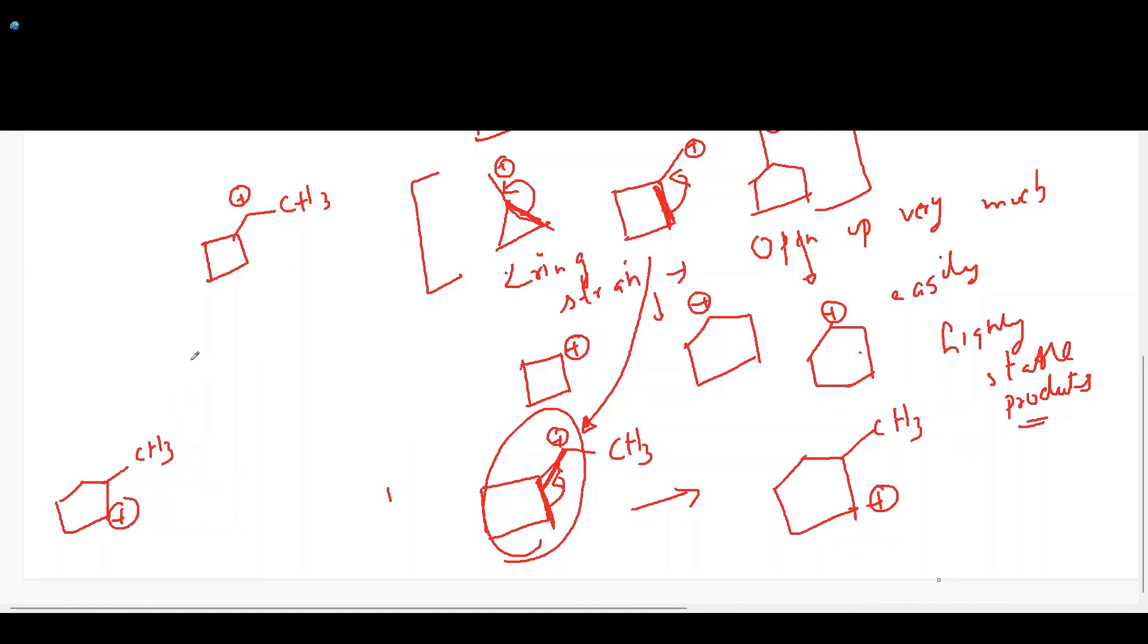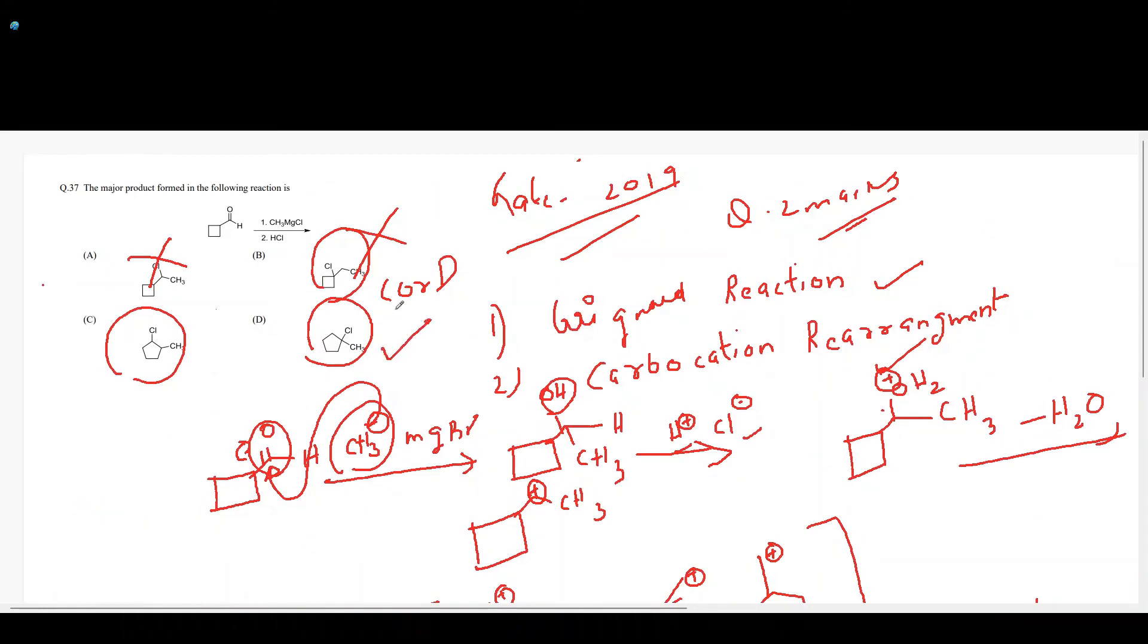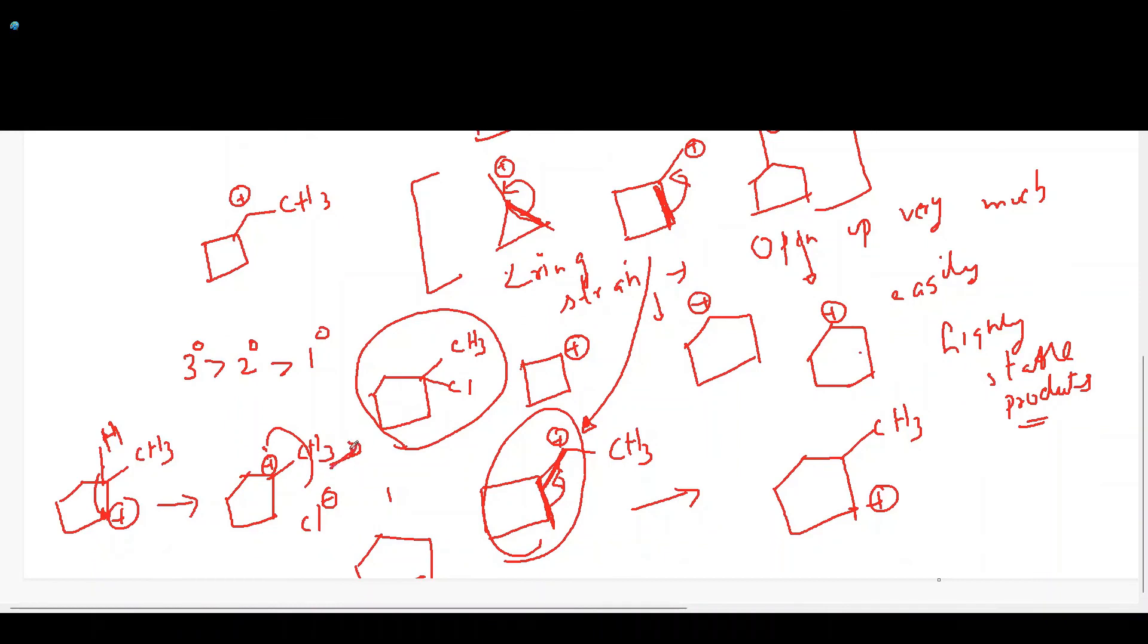When you come here, you have your carbocation. We know the very basic thing that a tertiary carbocation is more stable than the primary carbocation. This hydride will shift, resulting in the formation of a more stable tertiary carbocation with CH3 and plus charge. Your Cl minus will attack here to form CH3 and Cl. This is your product. I think you all people understood this now.